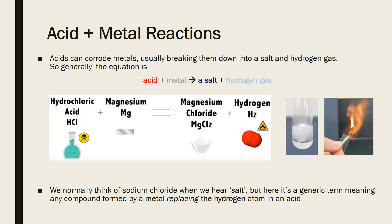Acids can corrode metals, usually breaking them down into a salt and hydrogen gas. So generally the equation is an acid being added to a metal, and these two react together to produce a salt and hydrogen gas.